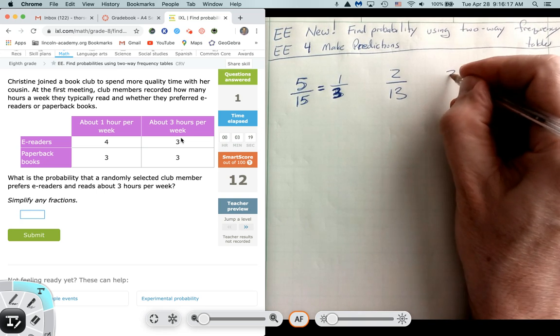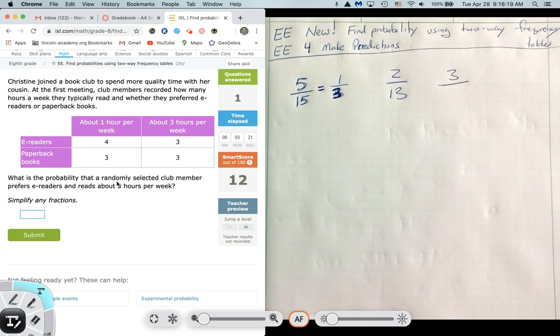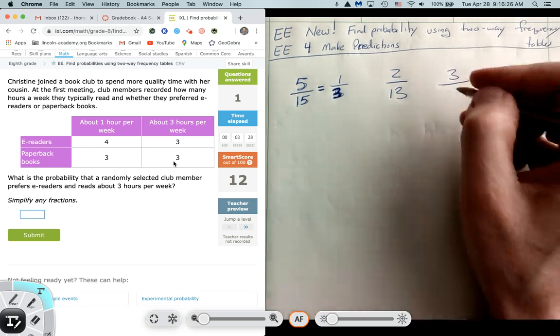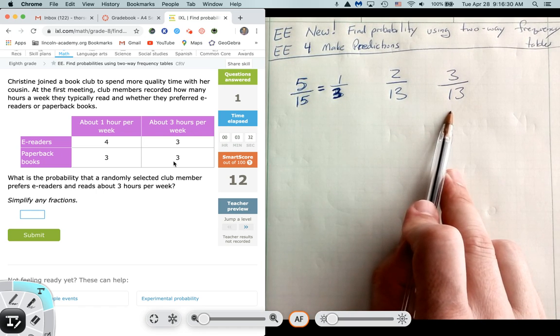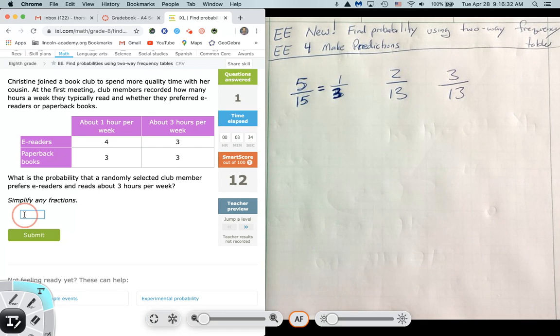So we have 3 out of, and we usually always take it out of the total. So we have four and three is seven, plus three is ten, plus three is thirteen. So we get 3 out of 13. Now remember, if this fraction could reduce, I would reduce it. It doesn't. So the probability would be 3 out of 13.